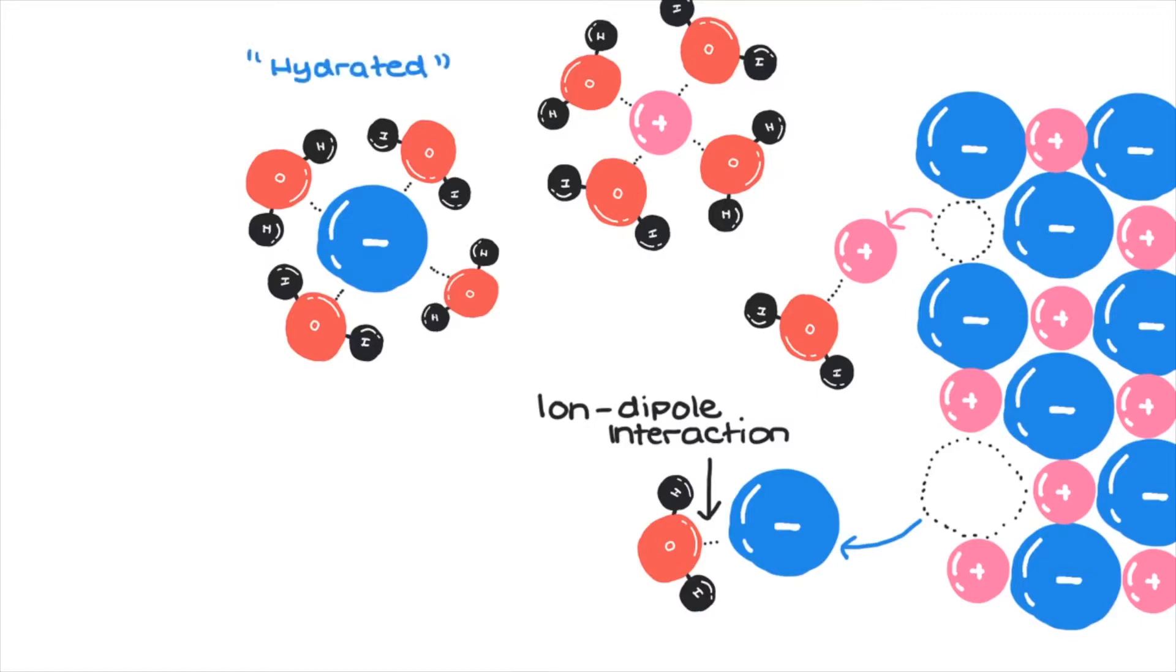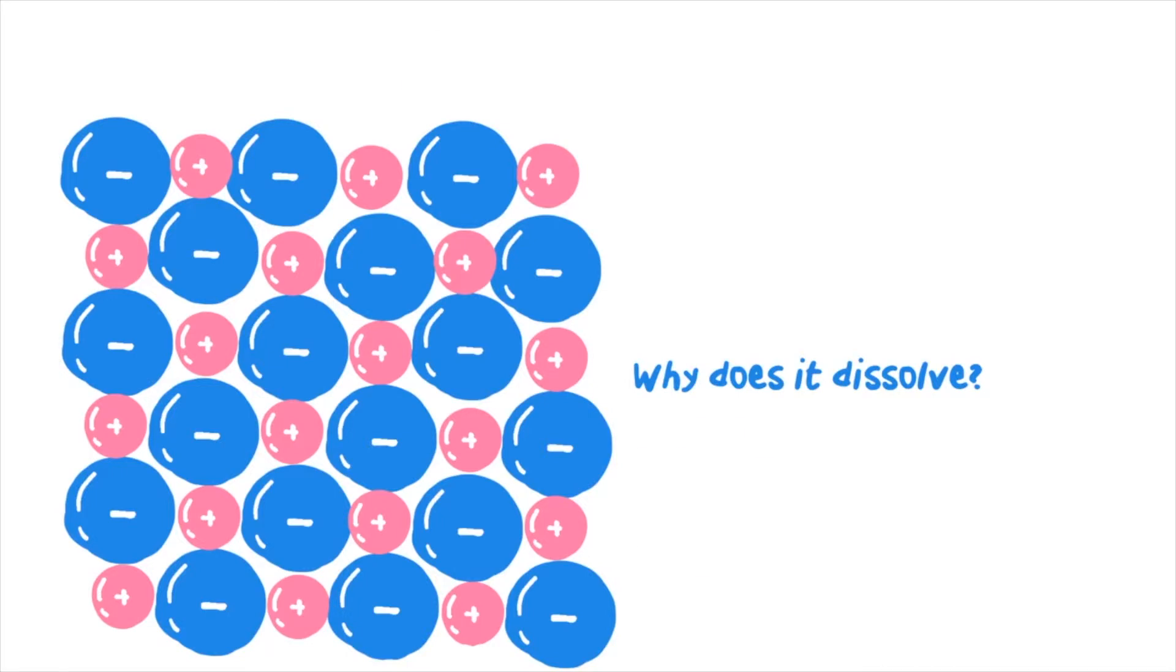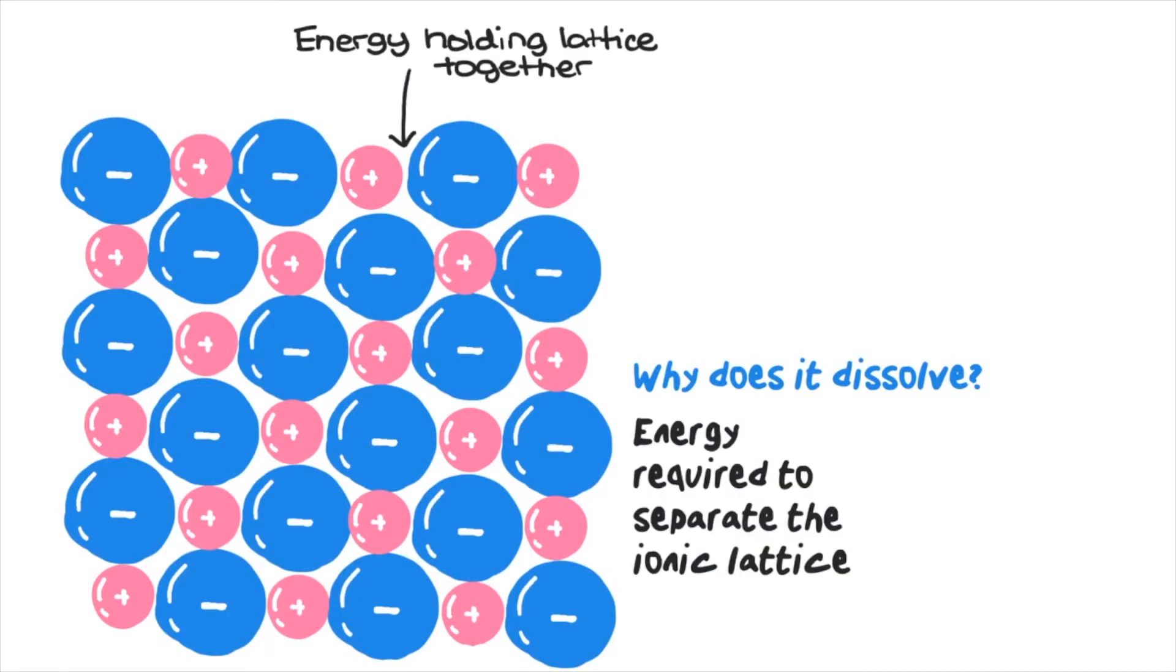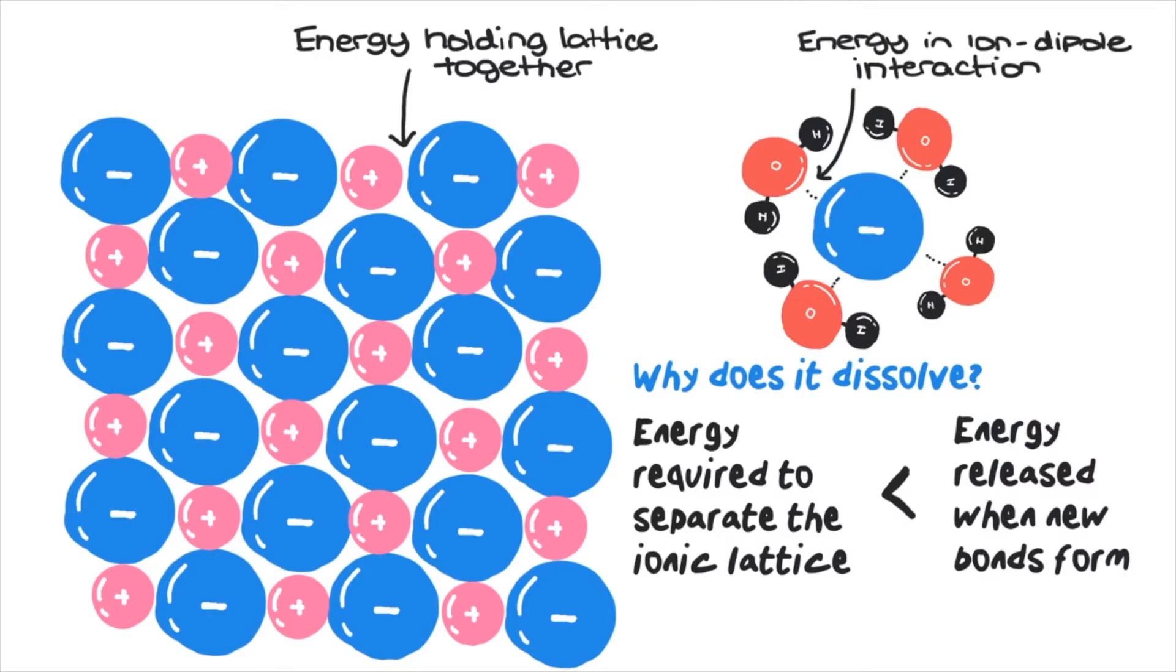Once broken off and away from the lattice, it has dissolved. But what governs this behavior? First of all, the amount of energy required to separate the ionic lattice must be less than the energy released when the ions are hydrated by the water—that is, when the ion-dipole is formed—because energy is required to break bonds and energy is released when bonds are formed.